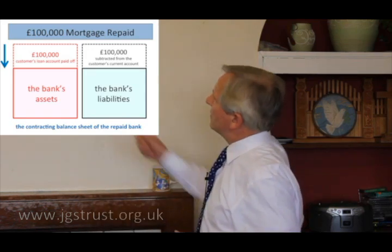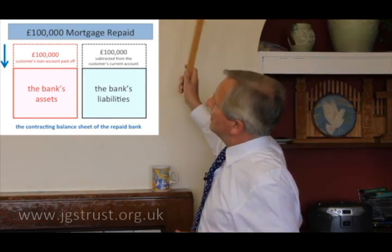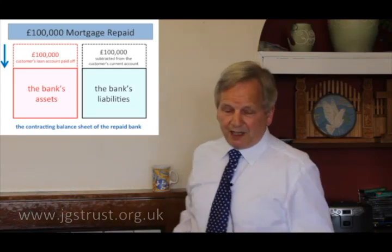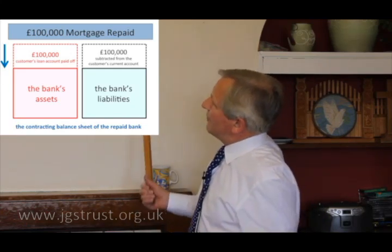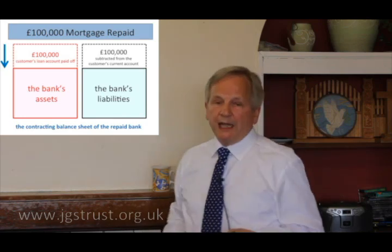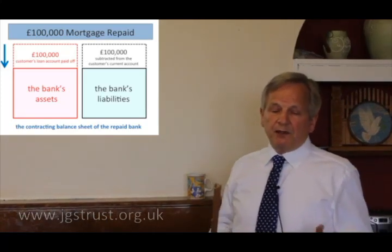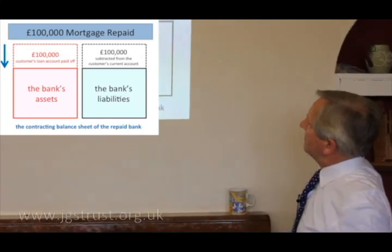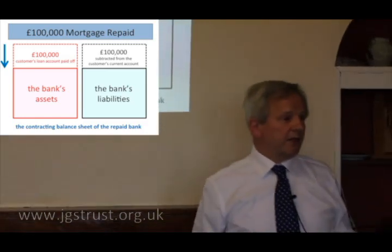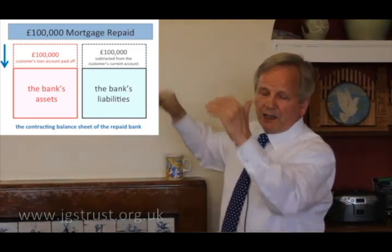Let's see that schematically. Here's the balance sheet. The dotted lines are before the event, and the solid lines are both before and after. When this event of debt repayment happens, the effect on the balance sheet is that the loan account is paid off, so it disappears. The customer's current account has gone down by 100,000, so we see the two sides have shrunk — just the opposite of when they expanded when the loan was taken out.